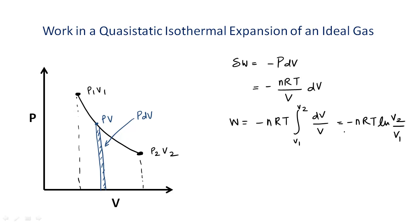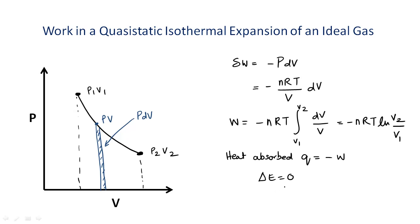The negative sign indicates that work is done by the gas. The heat absorbed Q equals −W, which can be obtained from the first law of thermodynamics because the change in internal energy ΔE is equal to zero during this isothermal process. In a quasi-static expansion, the maximum amount of work is done by the gas during the change of state.